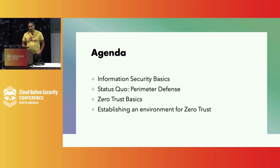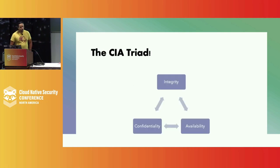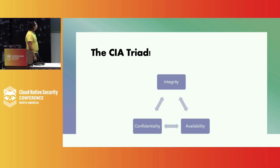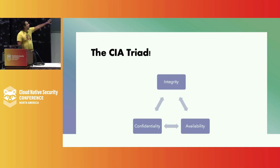We don't want to treat them as a brick wall we have to scale, but instead as valuable partners that help us get to where we want to go. Whenever you talk with someone who's in security or InfoSec, you will often see this triangle — it's the CIA triad, which covers confidentiality, integrity, and availability.